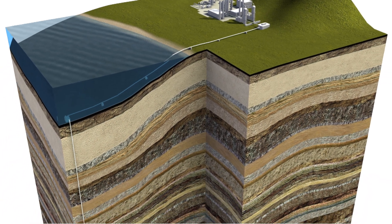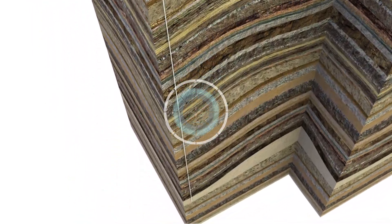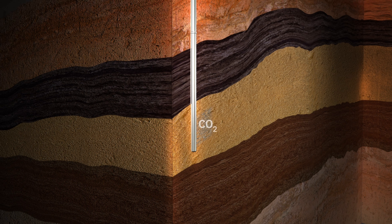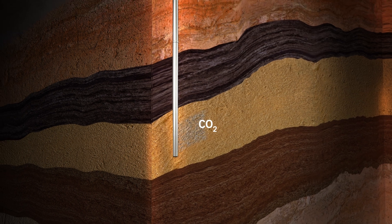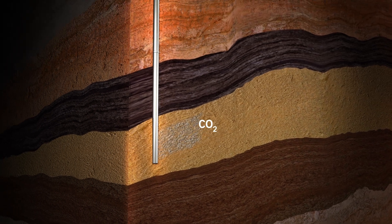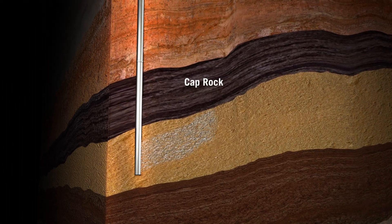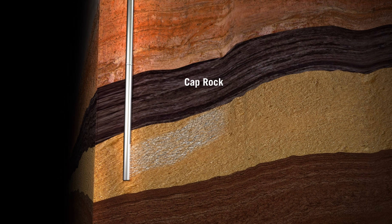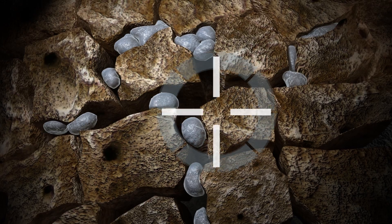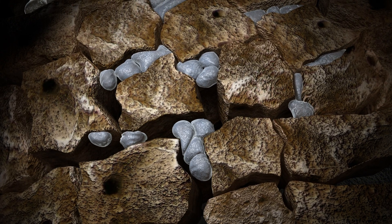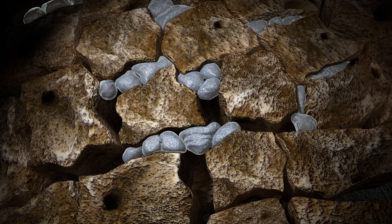These include depleted oil and gas fields or deep saline aquifers. The CO2 is injected into these formations. The cap rock prevents it from returning to the surface and it becomes trapped within the pores of the rock.